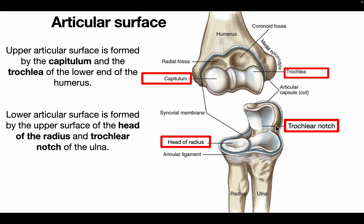As we can make out in the diagram, this is the capitulum and this is the trochlea of the humerus, while this is the head of the radius and this is the trochlear notch of the ulna.